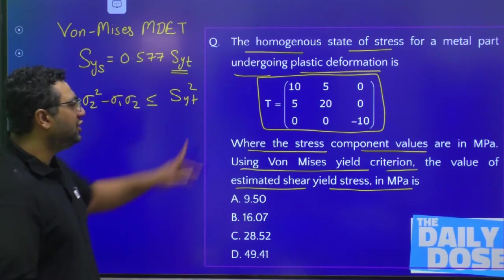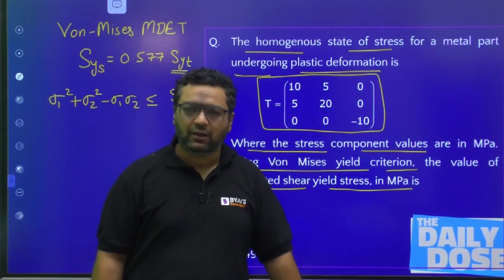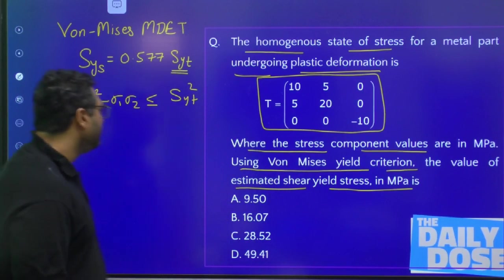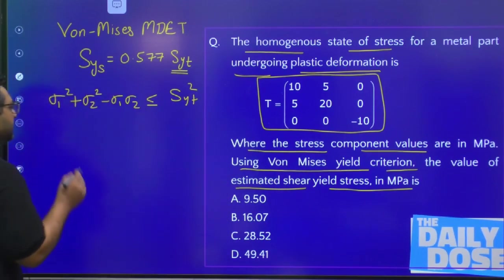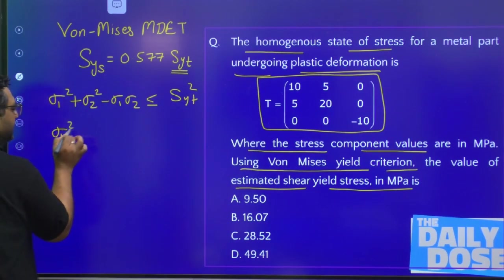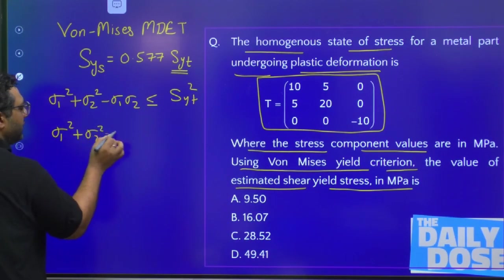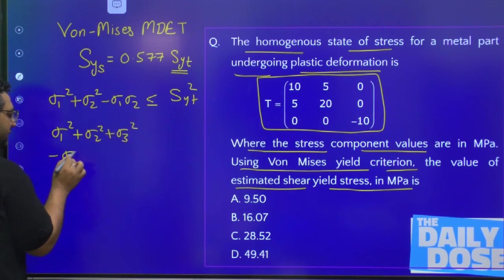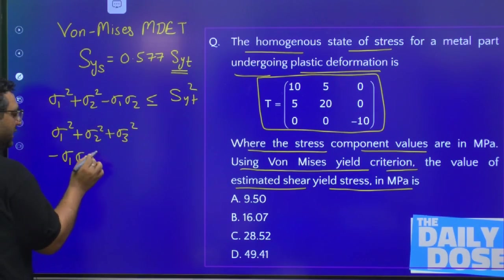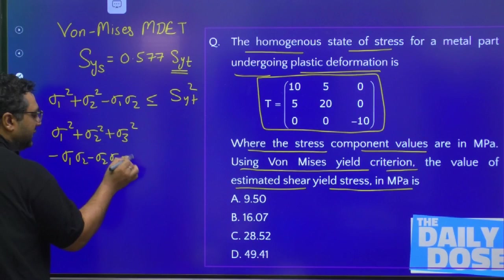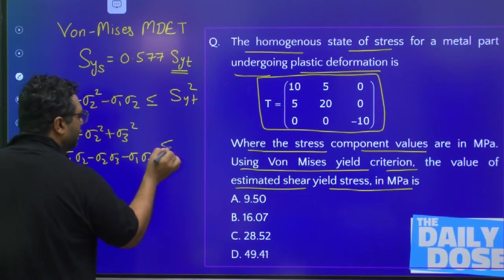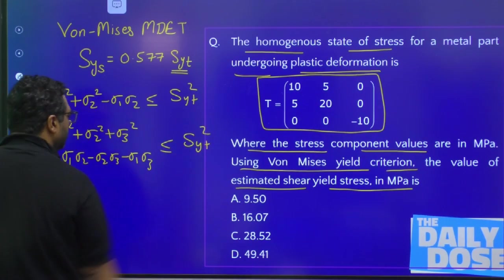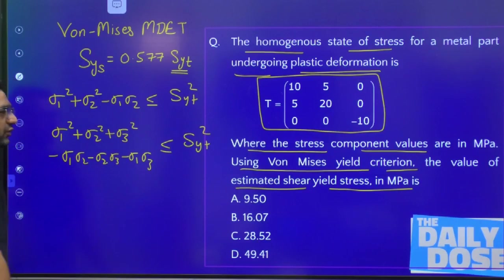As they have mentioned, plastic deformation will start, so the factor of safety will be 1. For 3D, the Von Mises formula is: σ1² + σ2² + σ3² − σ1·σ2 − σ2·σ3 − σ1·σ3 ≤ Syt². This is the three-dimensional form.